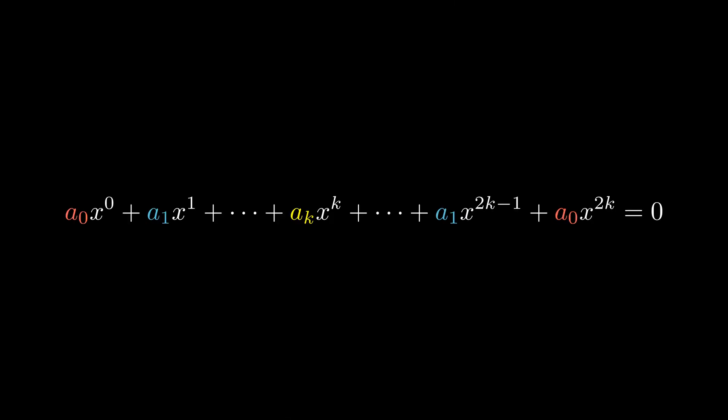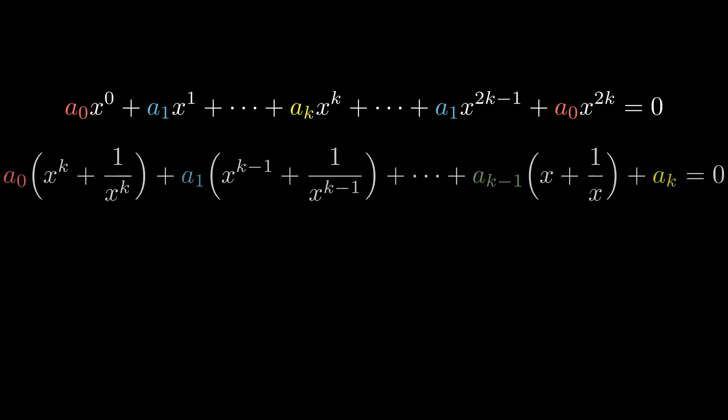So, to summarize, if you have a polynomial with an even degree, say 2k, and if the coefficients are symmetrical, then you can transform it into another polynomial with a degree twice as small by following these steps.